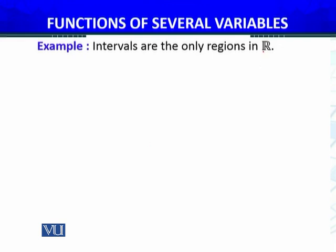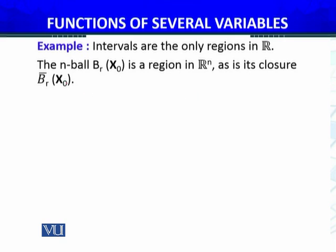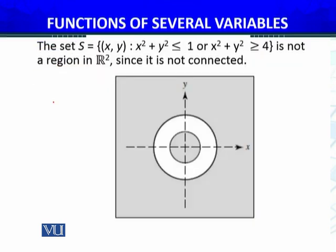First example of the regions in R are the intervals. Intervals are the only regions in the real line. The n-ball, Br(x0) centered at x naught with radius R is a region in Rn. As is its closure. This is a set which contains x square plus y square less than or equal to 1.